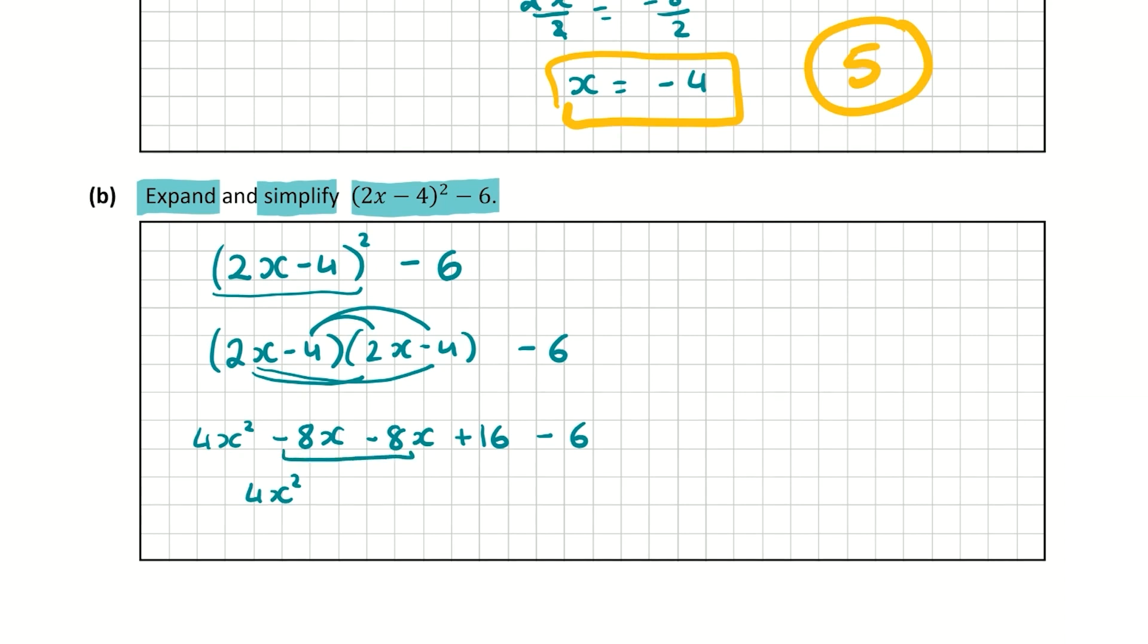So the only x squared term is 4x². Then we have two values of x. We have minus 8x minus 8x. So that's going to give us minus 16x. And then we have 16 minus 6 which is going to give us plus 10. So that is that expression simplified. So that's our final answer: 4x² minus 16x plus 10. And you're going to get a total of 10 marks for the correct answer for this question.